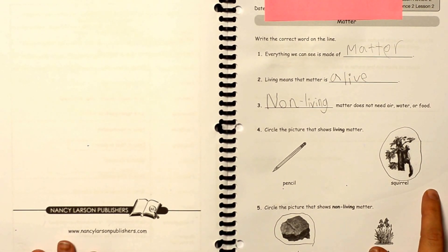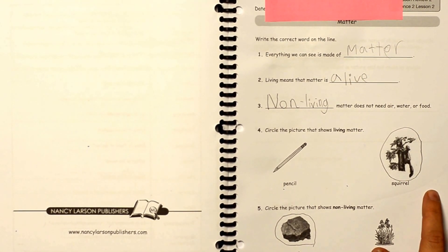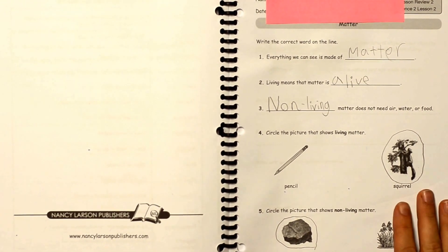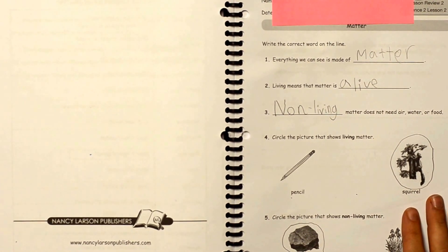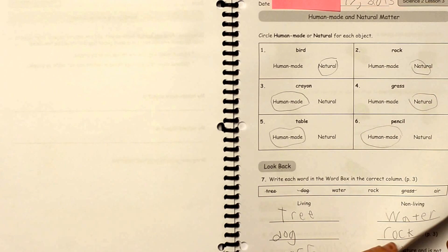On this page we've got the review lessons. In our house we do science on Mondays and Wednesdays, and these review worksheets he does on Tuesdays and Thursdays. It keeps everything fresh in between lessons, and it's just multiple choice, fill in the blank, these sorts of things to help him remember.